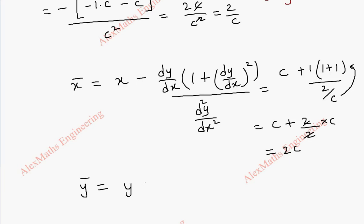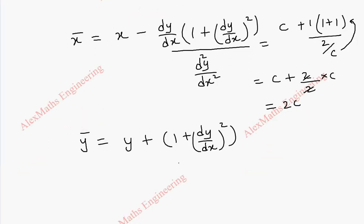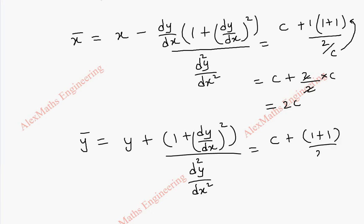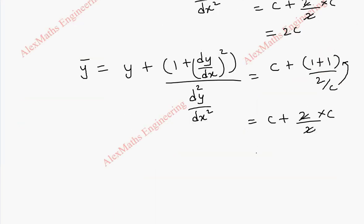Similarly, ȳ = y + (1 + (dy/dx)²) / (d²y/dx²). Substituting y = c and (1 + (−1)²) = 2, divided by 2/c, we carry c to get c + (2·c)/2 = c + c = 2c.